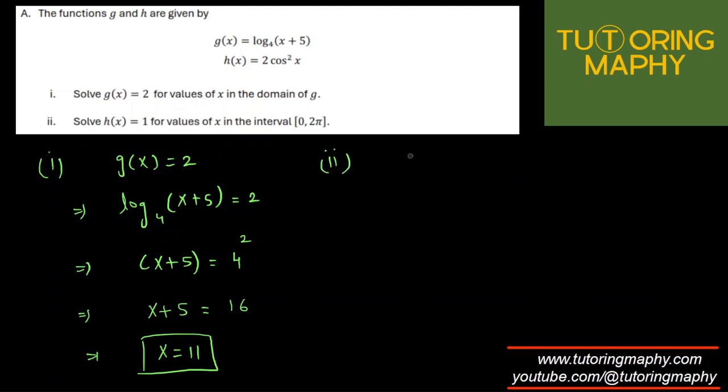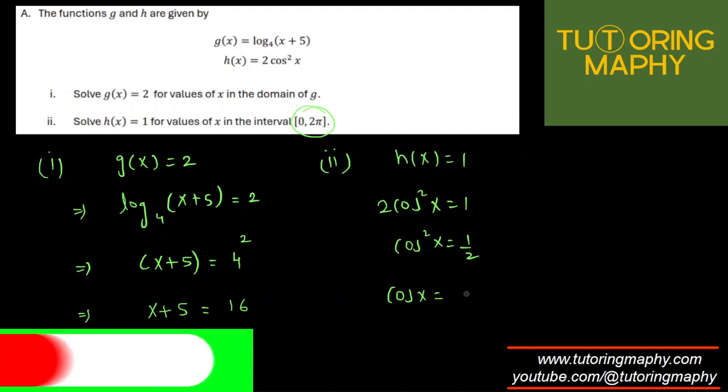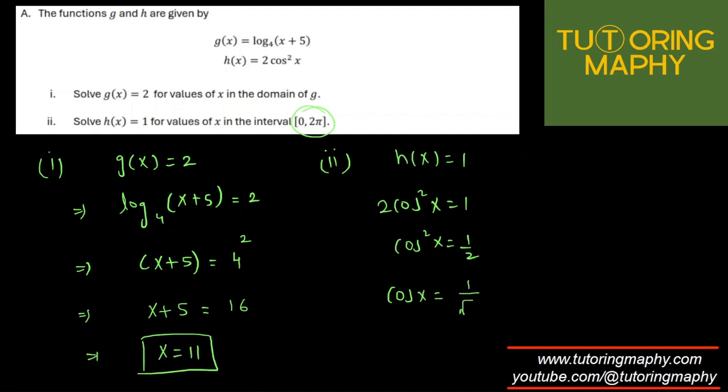Alright, part 2. Now they are asking us to solve for h(x) = 1 in the interval of 0 to 2π. Okay, I can do that. So h(x) = 1 which means that 2cos²x = 1 which means that cos²x = 1/2 which means that cos x = what do you think I will write here, guys? Okay, this is a pitfall because I have seen students writing 1/√2 which is incomplete because you have missed a plus and minus over here.